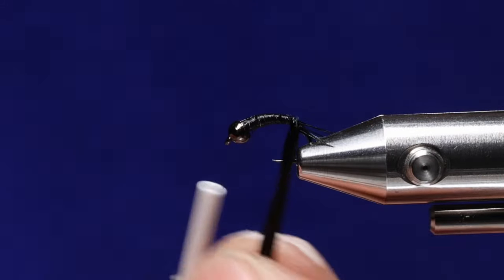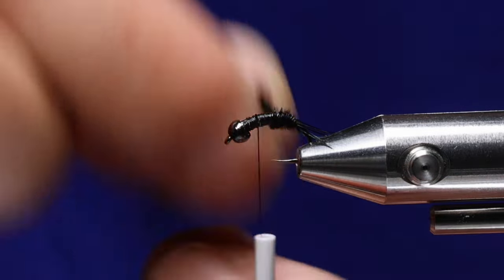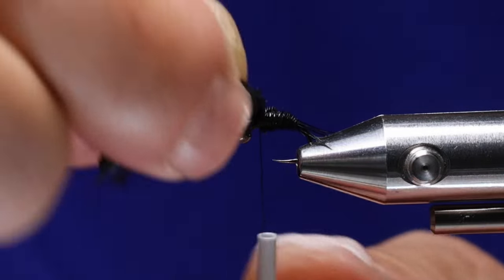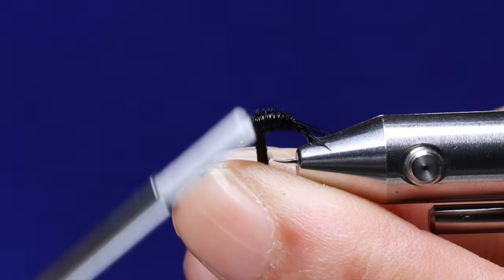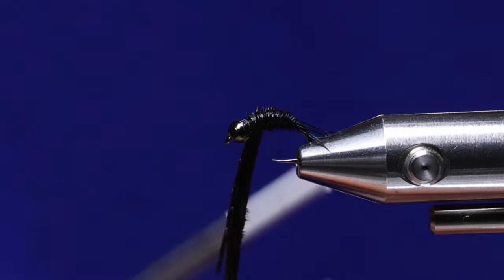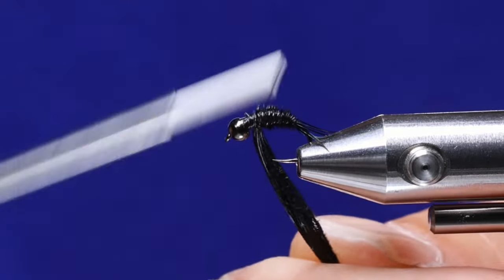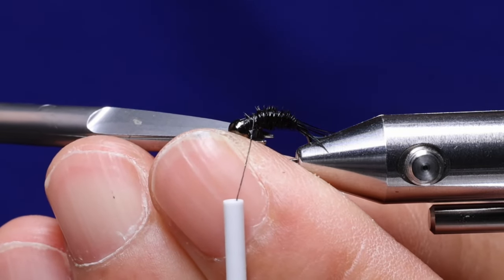Then all I'm going to do is basically wrap the pheasant tail fibers. I'm going to leave a small gap between the pheasant tail and the bead. We're going to build up our thorax and then trim off the excess.